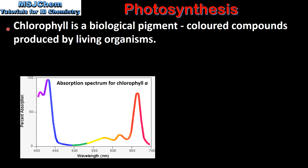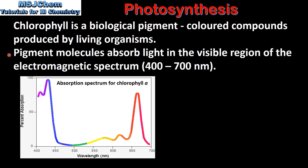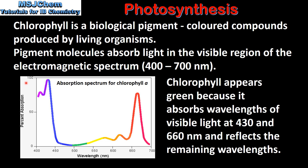Chlorophyll is a biological pigment. Biological pigments are coloured compounds produced by living organisms. Pigment molecules absorb light in the visible region of the electromagnetic spectrum, which has a wavelength of between 400 and 700 nm. Here we have the absorption spectrum for chlorophyll. Chlorophyll appears green because it absorbs wavelengths of visible light at 430 and 660 nm and reflects the remaining wavelengths.